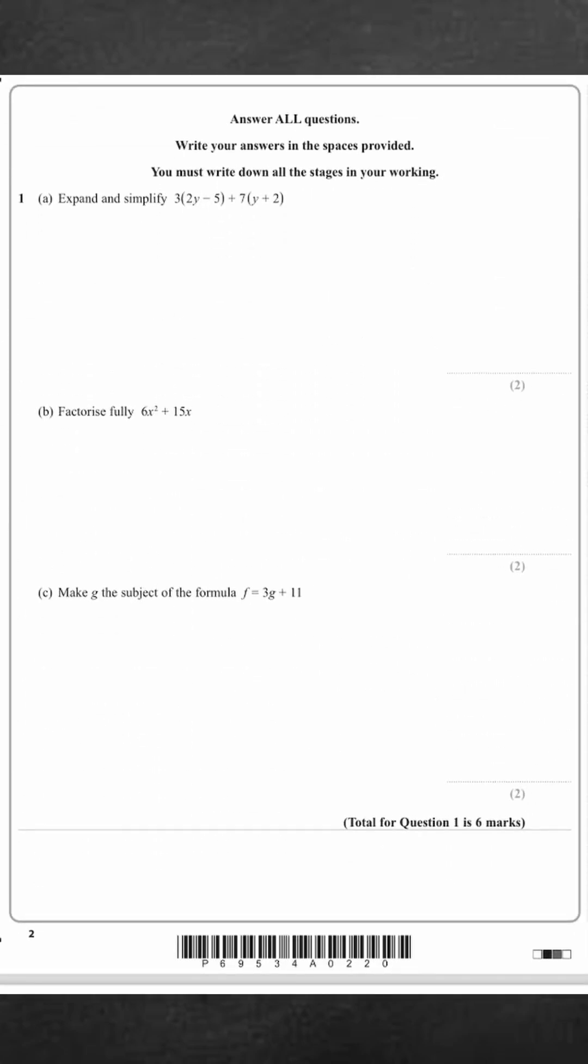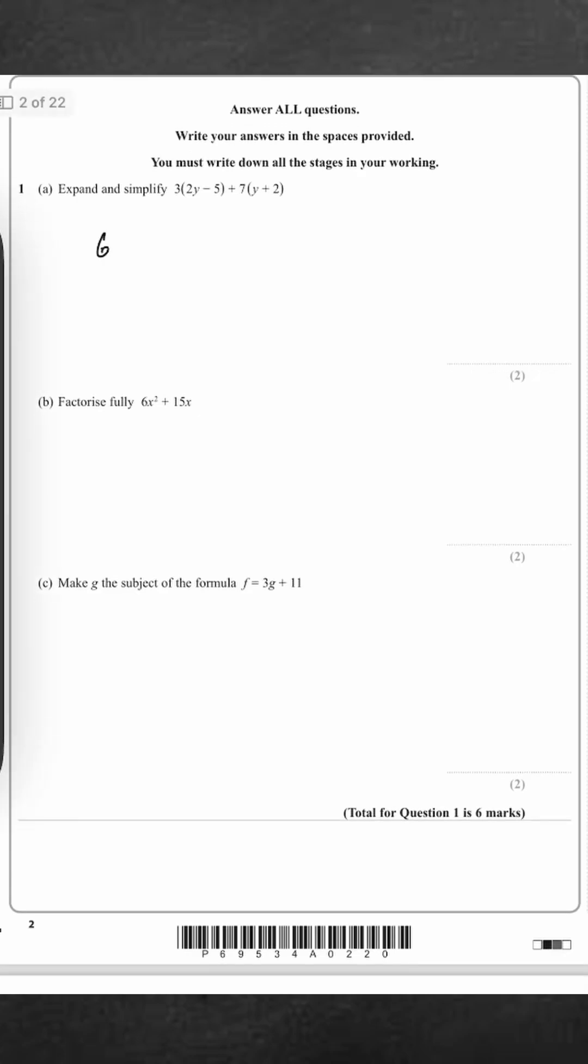Expand and simplify 3(2y - 5) + 7(y + 2). So all we're going to do here is three times 2y, which is 6y, three times minus 5, which is minus 15, seven times y, which is 7y, and seven times two, which is 14. 6y plus 7y is 13y, minus 15 plus 14 is minus 1.